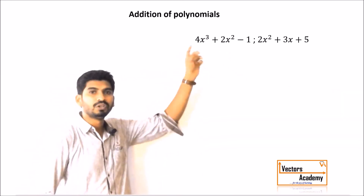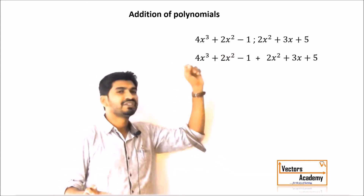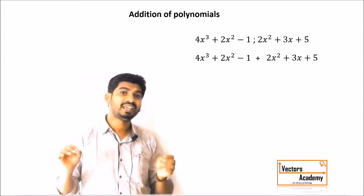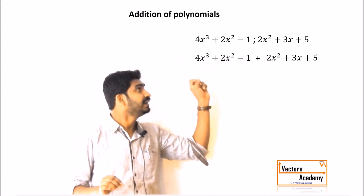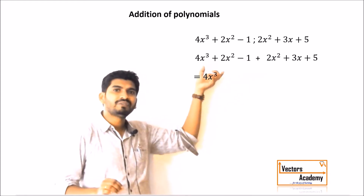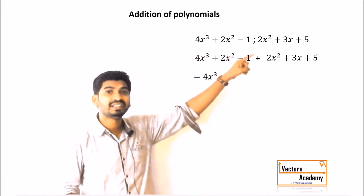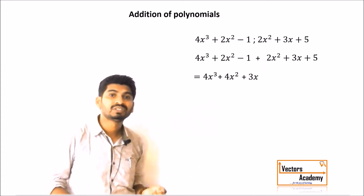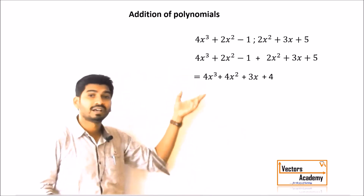Now let us understand how polynomials are added. Consider these two polynomials. To add them, we write both polynomials with an addition sign in between. Then we identify the like terms — those terms which have the same degree. For example, the term 4x³ has no matching term, so we write it as is. For x², we have 2x² and 2x², which add to give 4x². We keep adding the like terms and arrange the result in descending order to get the final sum.